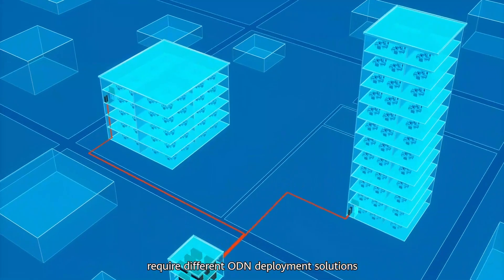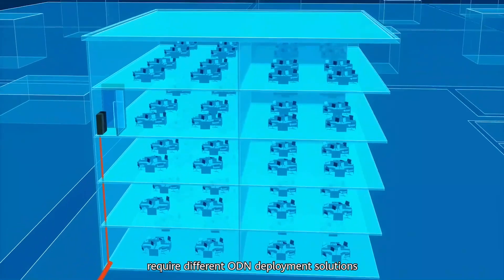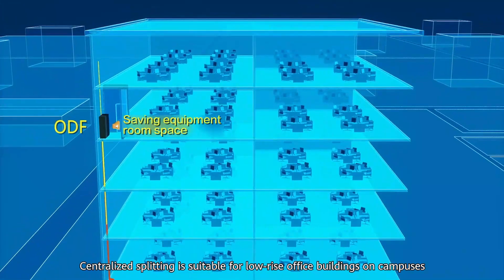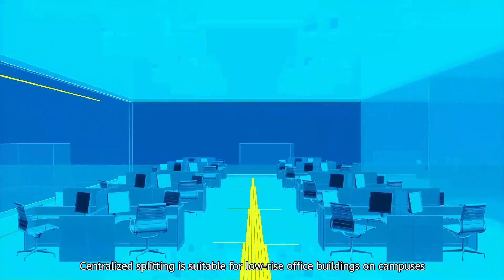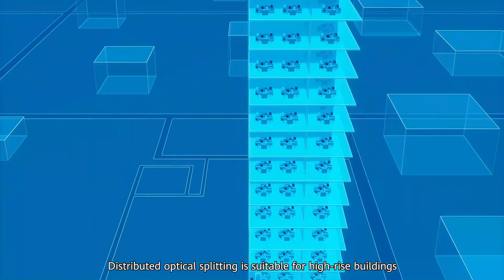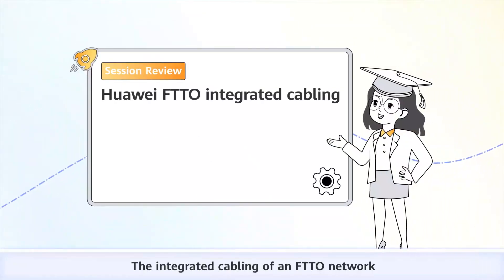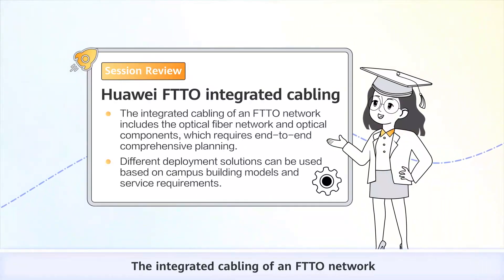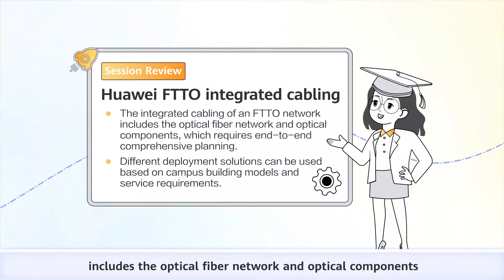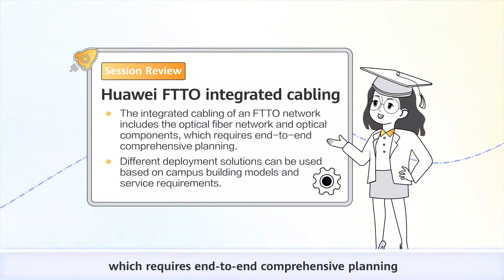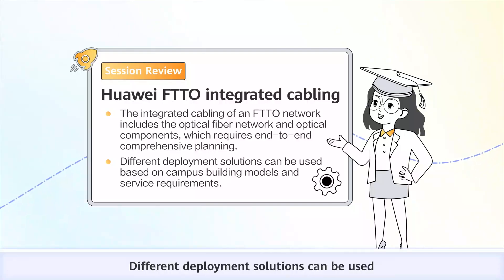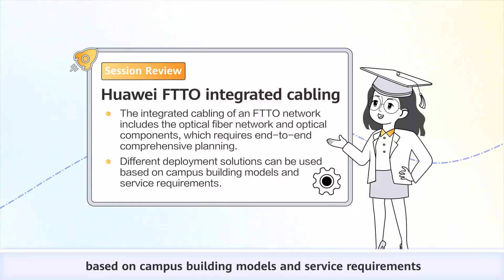Centralized splitting is suitable for low-rise office buildings on campuses, while distributed optical splitting is suitable for high-rise buildings. In summary, the integrated cabling of an FTTO network includes the optical fiber network and optical components, which requires end-to-end comprehensive planning. Different deployment solutions can be used based on campus building models and service requirements.